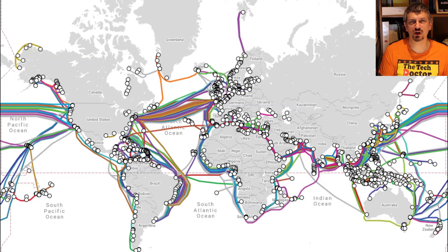So what does it look like? Well, in a global sense it looks like this giant map. It depicts hundreds of thousands of kilometres of submarine, or undersea, fibre optic cables. These are used to link up many of the major cities across the globe.